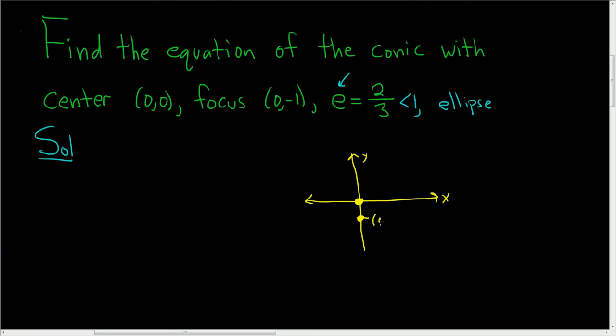This is (0,-1). And we know it's an ellipse because the eccentricity is less than 1, and the foci always lie on the major axis, so we know that we have a vertical major axis.